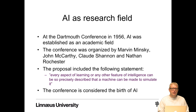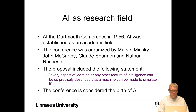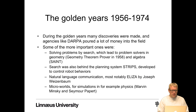AI as an academic research field was established at the Dartmouth Conference in 1956. The conference was organized by Marvin Minsky, John McCarthy, Claude Shannon, and Nathan Rochester. The proposal included the statement: 'Every aspect of learning or any other feature of intelligence can be so precisely described that a machine can be made to simulate it.' Quite bold words — we are not actually there yet. But this conference is considered the birth of AI.